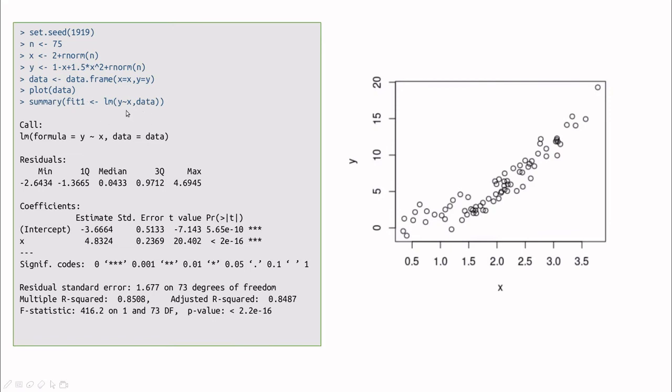So what if we do a simple linear regression? You can see that, okay, this is not bad. R squared is pretty large. So 85% of the variance of y is explained by x, and the coefficients are significant. So I would be happy with this.